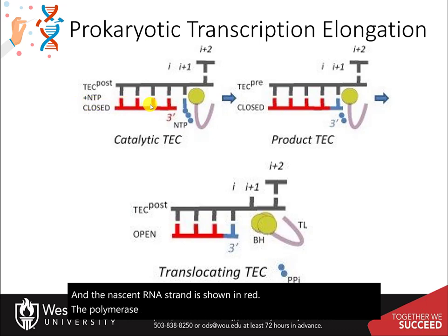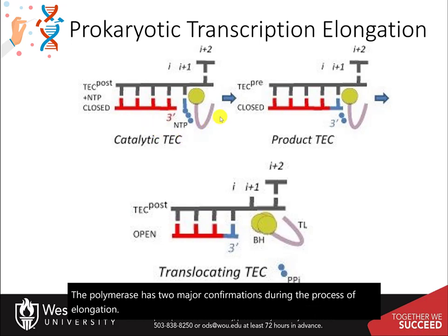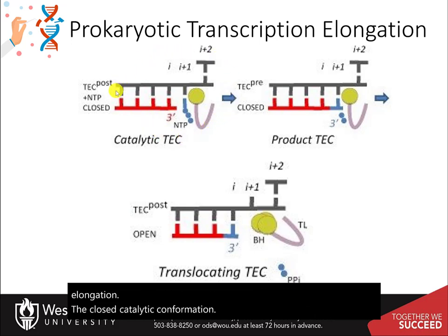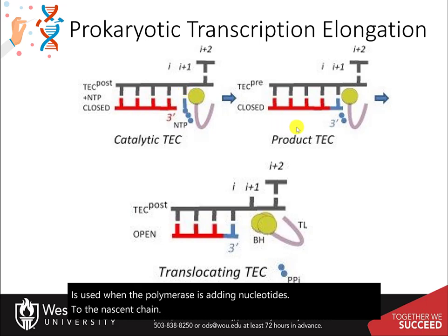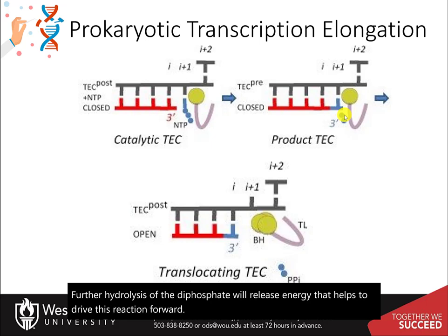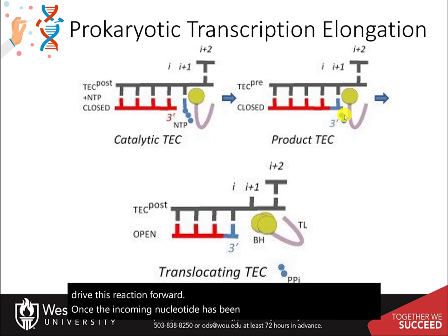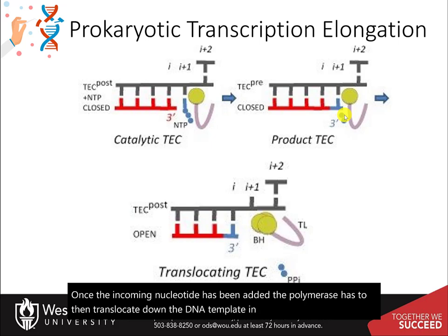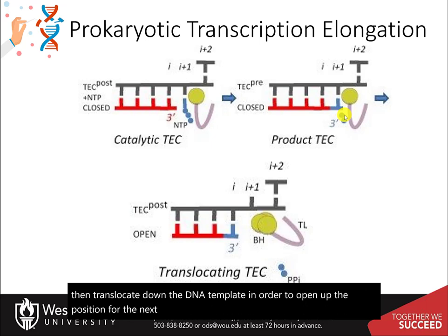The polymerase has two major conformations during the process of elongation. The closed catalytic conformation is used when the polymerase is adding nucleotides to the nascent chain. Notice here that a diphosphate is cleaved from the incoming nucleotide. Further hydrolysis of the diphosphate will release energy that helps to drive this reaction forward. Once the incoming nucleotide has been added, the polymerase has to then translocate down the DNA template in order to open up the position for the next nucleotide to enter. It does this by switching to an open conformation.